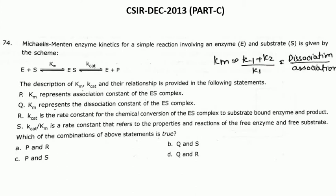The first question was related to Michaelis-Menten. The Michaelis-Menten enzyme kinetics for a simple reaction involving enzyme and substrate is given as E plus S, KM, Kcat. Don't confuse KM as K1 and Kcat as K2. KM is the dissociation divided by association — KM is defined as the dissociation constant of the ES complex. So let's see the relationship between KM, Kcat, and their definitions.